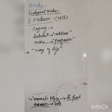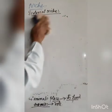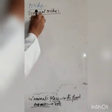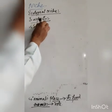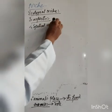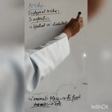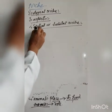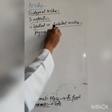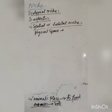Ecological niche has three aspects. The first is called the spatial or habitat niche. It denotes the actual physical space occupied by an organism, including its nesting and other requirements.